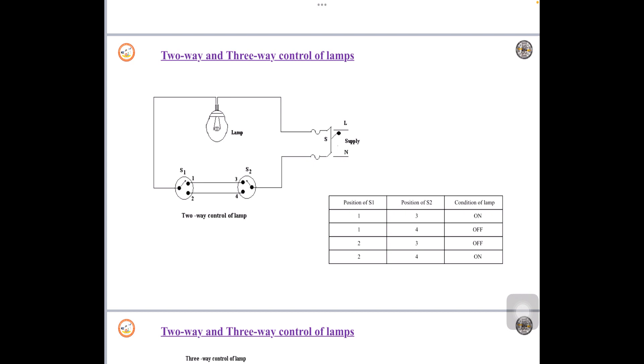For example, generally earlier 2-way control of lamps were used in staircases, long corridors, large cinema halls, etc.